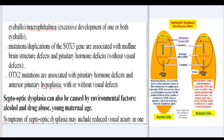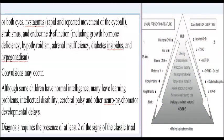Symptoms of septo-optic dysplasia may include reduced visual acuity in one or both eyes, hypothyroidism, nystagmus (rapid and repeated movement of the eyeball), strabismus, and endocrine dysfunction — including growth hormone deficiency, hypothyroidism, adrenal insufficiency, diabetes insipidus, and hypogonadism.